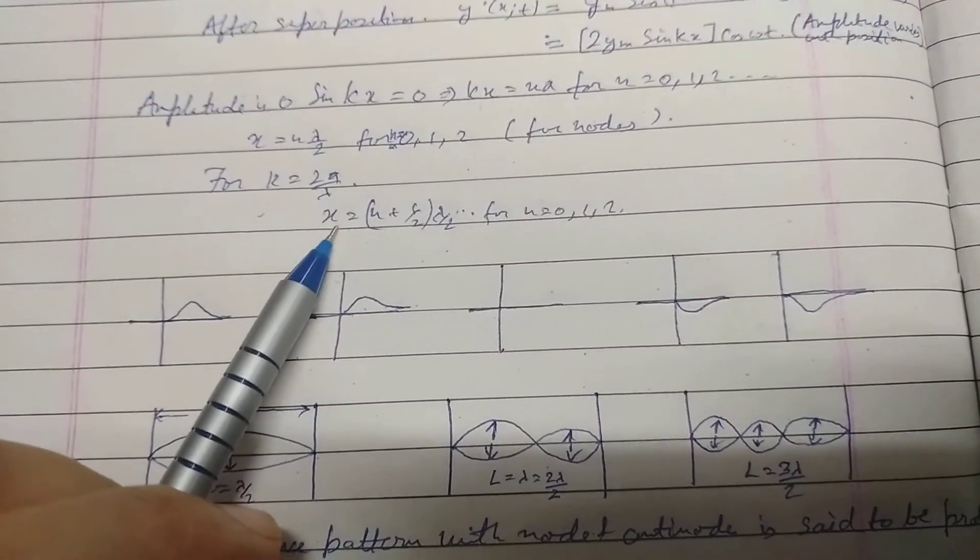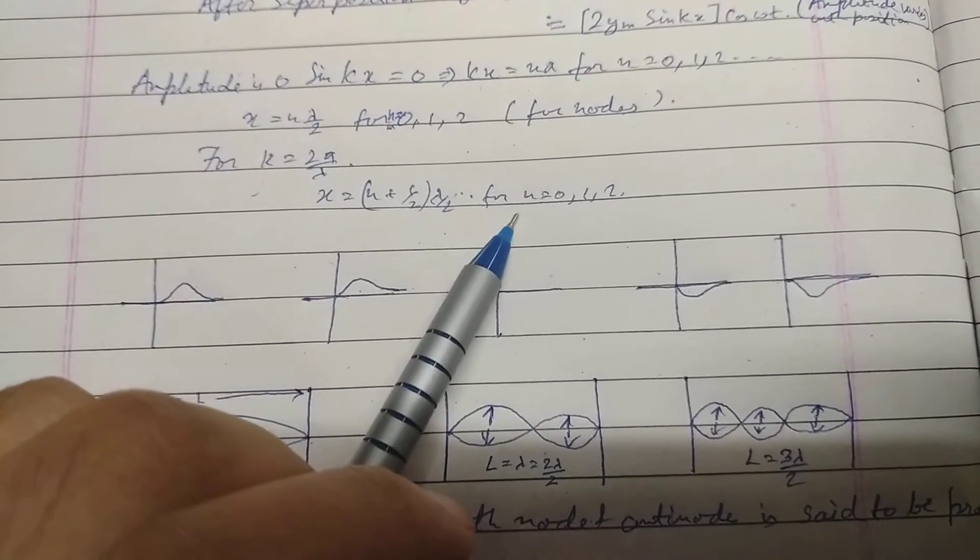For anti-nodes, where k equals 2 pi by lambda, x equals (n plus 1 by 2) lambda by 2 for n equals 0, 1, 2.